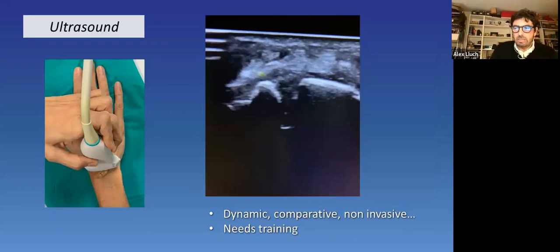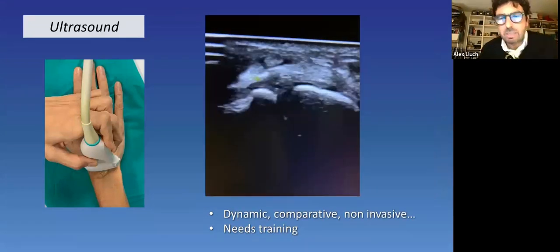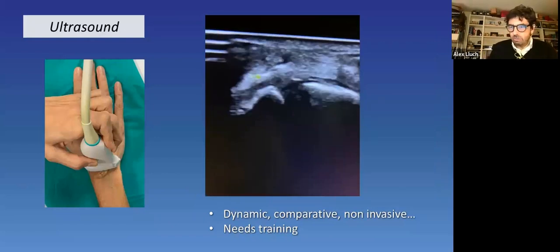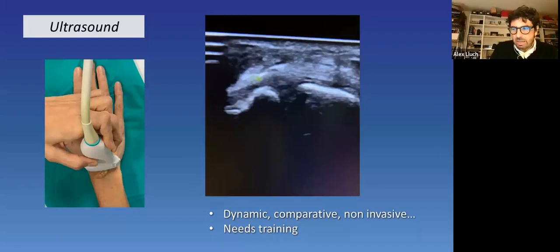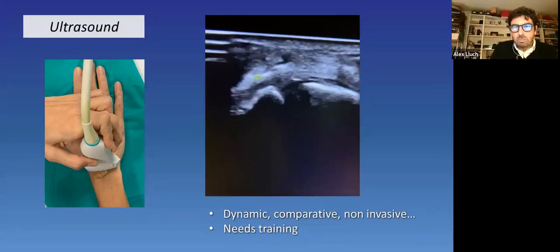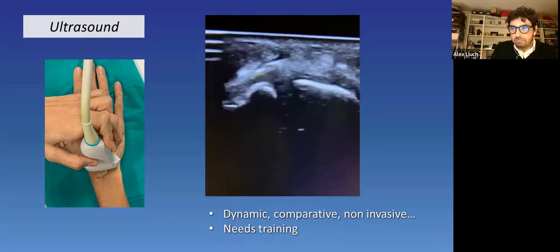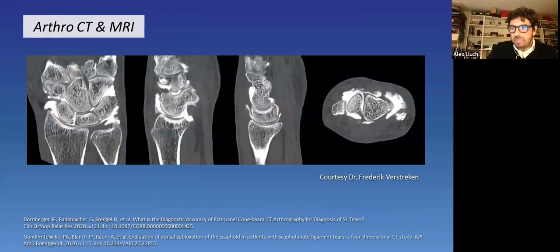On the right side, you can see the same test but done in fluoroscopy. With the device that you saw on the slide, it can be done at the same time and you can make measures and you are not using the other hand to provoke the gapping. Finally, ultrasound is definitely a good tool to see the dorsal scapholunate ligament, the scaphoid and the lunate on the dorsal side. It's non-invasive, it can be dynamic, can be done comparatively. The only problem is that you need training.